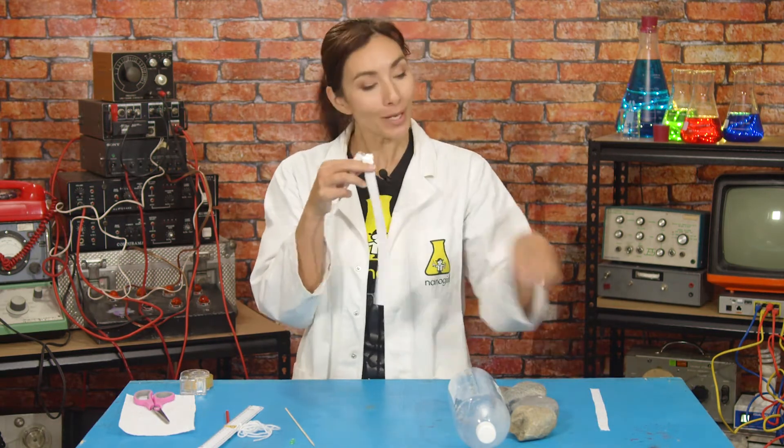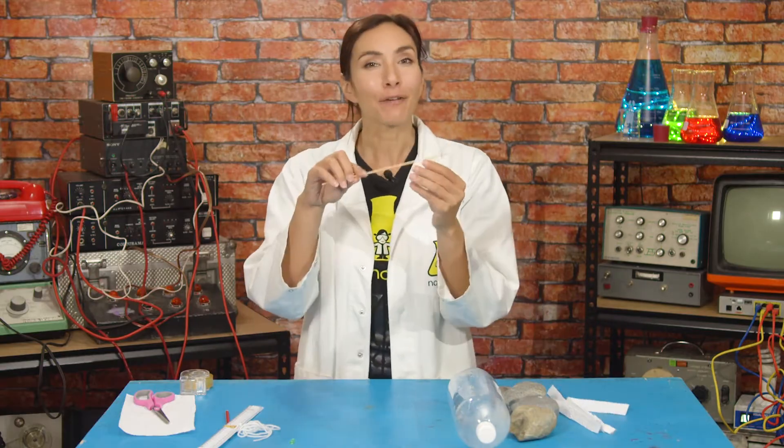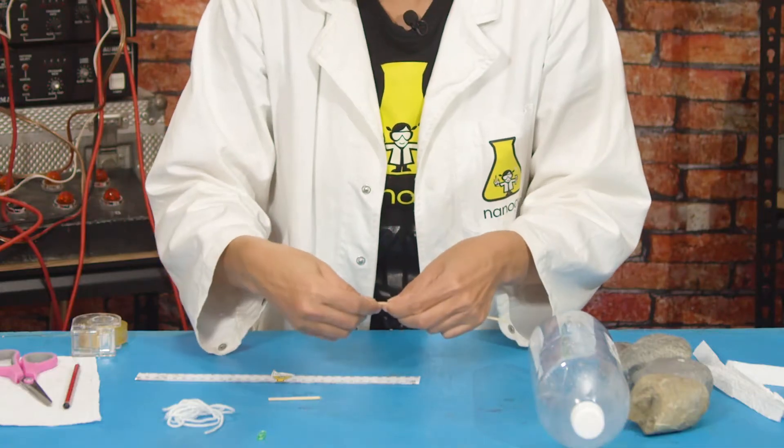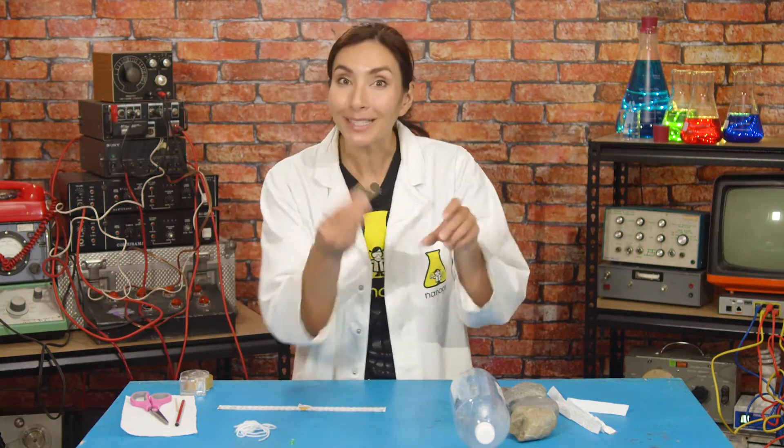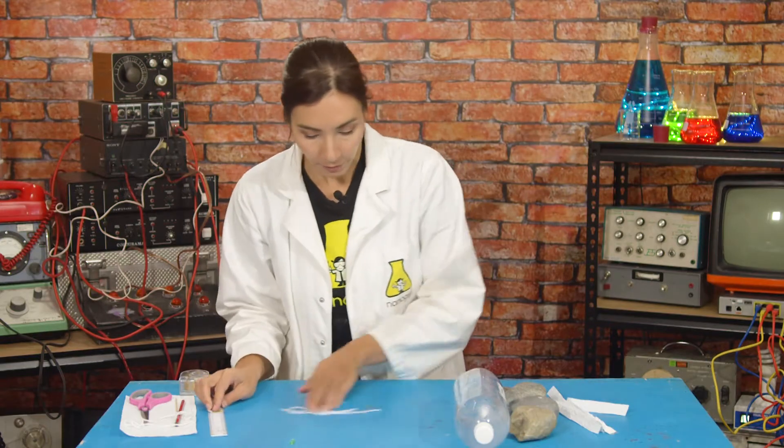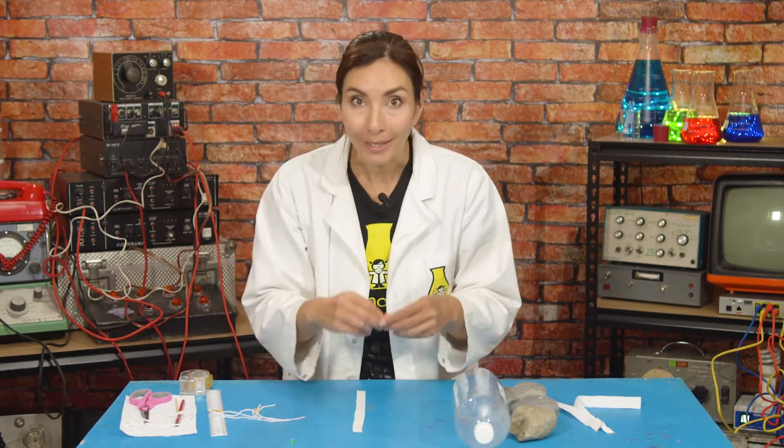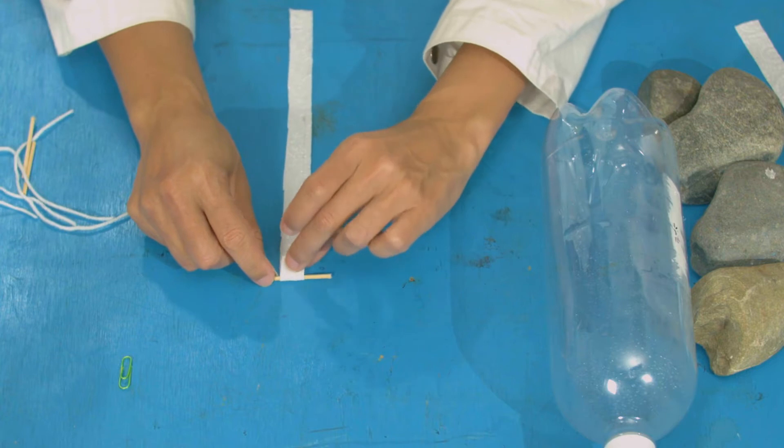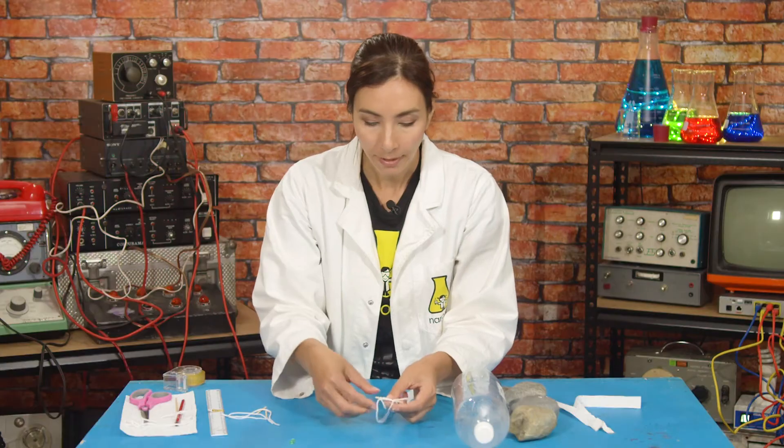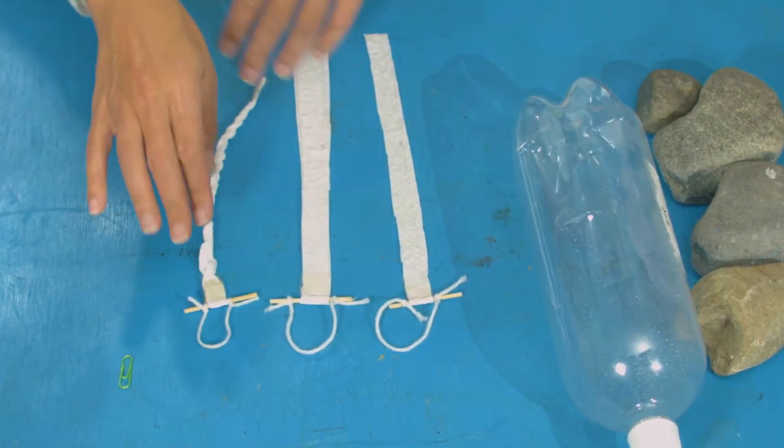These are our three samples that we are going to test the tensile strength on. Now we need a way to hang weights from them so you're going to take your skewer or your stick and measure five centimeters for three sections using a ruler. We're going to score them and then snap them. There's three, so we've got three equal five-centimeter sticks. Now we're going to cut three pieces of string that are 20 centimeters long. Now take one paper towel sample and place the skewer at one end and then curl the paper towel over to make a pocket and tape that closed. Next take a piece of string and tie each end to the end of the skewer. We've got a hook. We're going to do this for your three different samples.